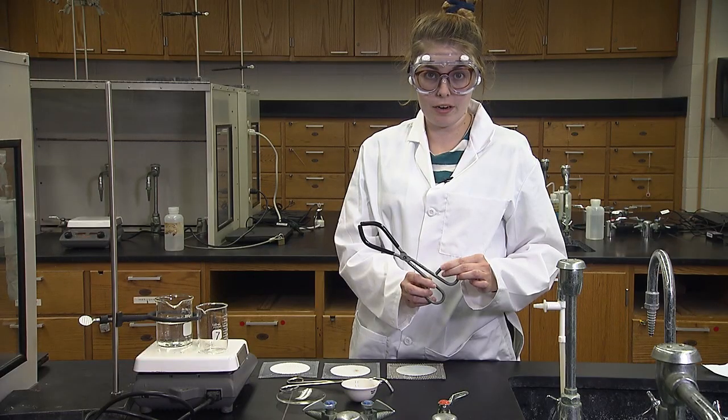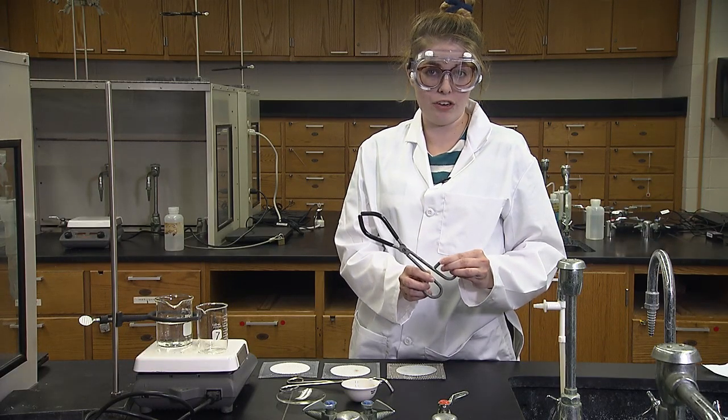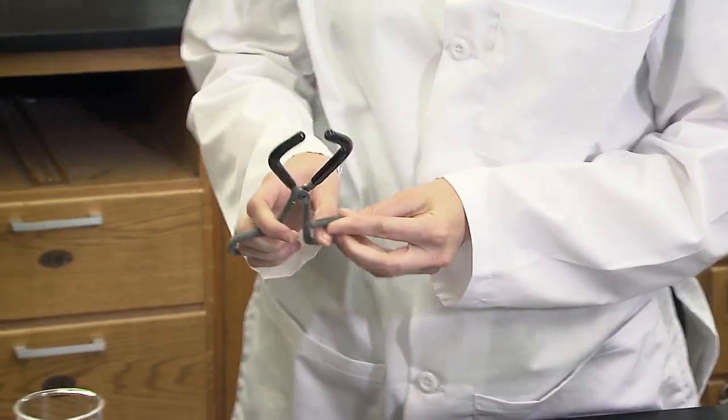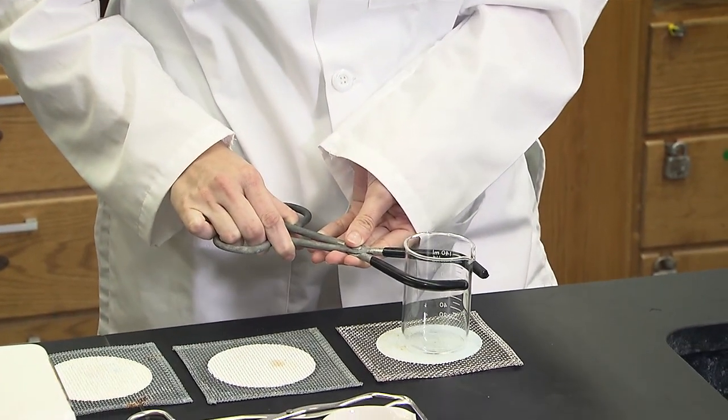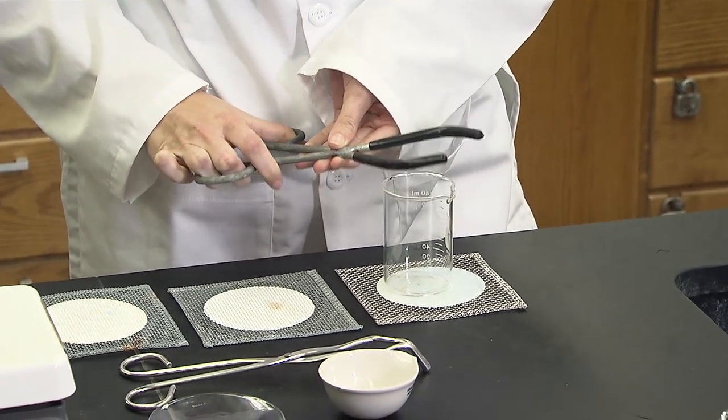When removing the beaker, you will use beaker tongs found in the general equipment drawer. Always move hot glassware to a heat-resistant mat found in the general equipment drawer.